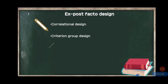Remember that correlational design does not tell cause and effect — it only tells direction. Now we have criterion group design. What happens in criterion group design is that we take a variable and try to know the cause of that particular variable.